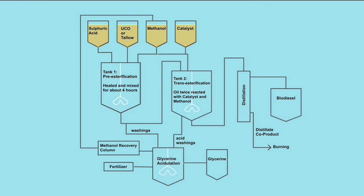The first stage of the chemical process that produces biodiesel is called pre-esterification. In this phase, a tank is filled with either tallow or used cooking oil, mixed with sulphuric acid and methanol, heated, stirred, and then left to settle.